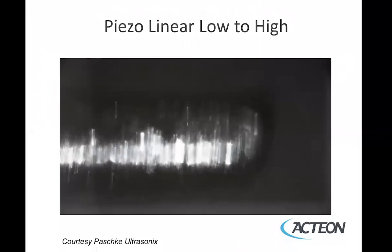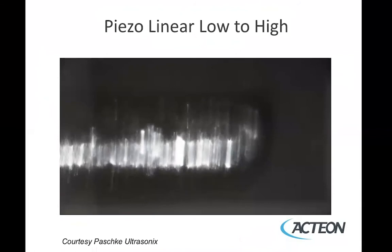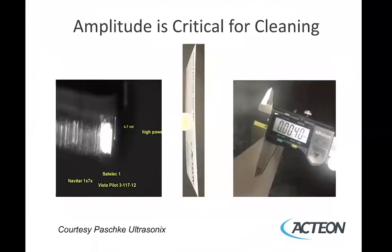This is an example of what the linear stroke looks like under a video microscope. As power goes from low to high, you can see the stroke length becoming longer. The stroke length at high power is about the same as the thickness of a business card — and that's regardless of technology; it's the same for magnetostrictive as well as piezo. This means our technique needs to use overlapping strokes to cover every square millimeter of the tooth.